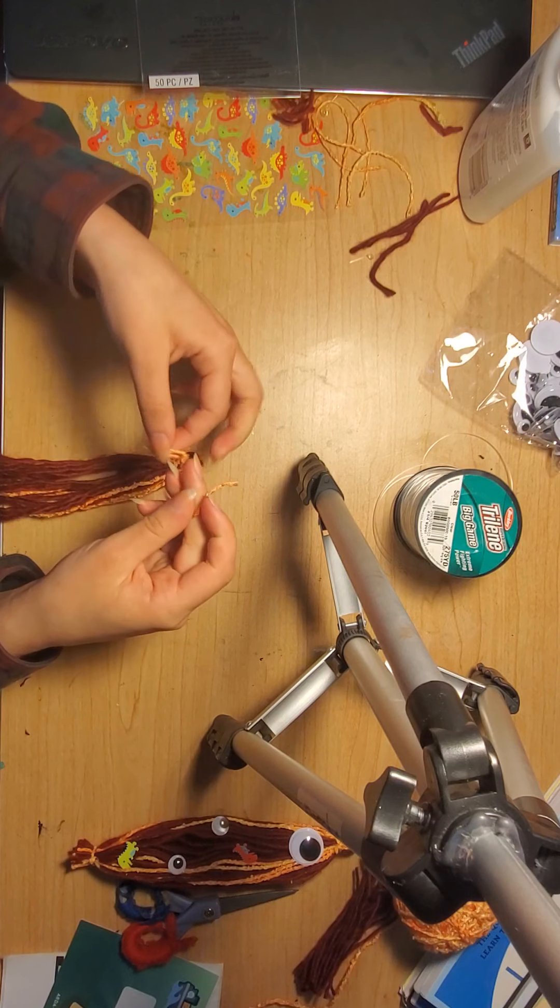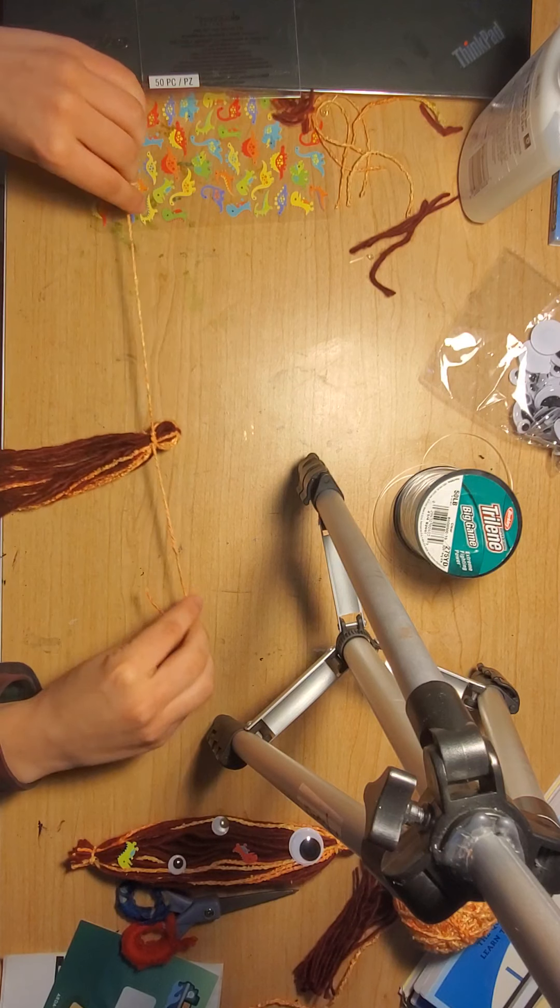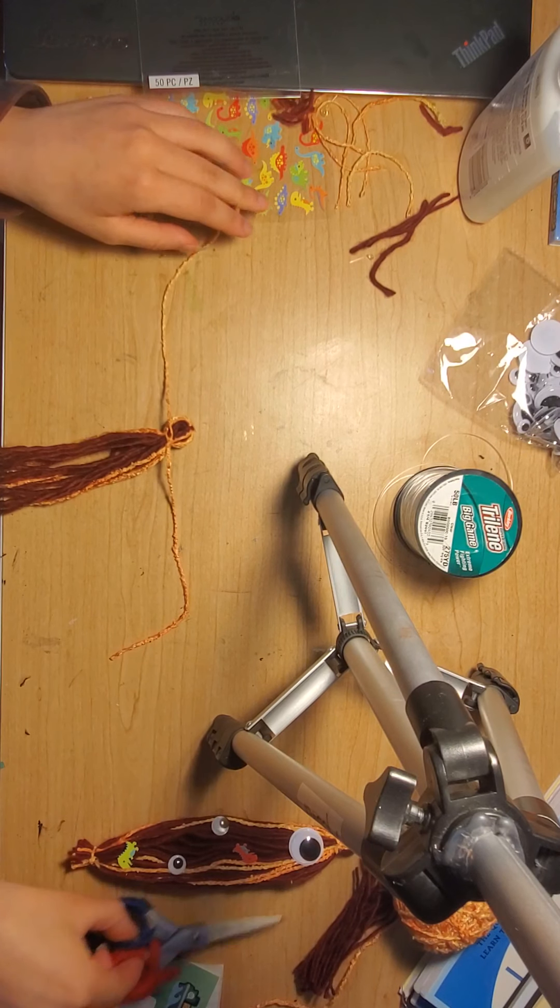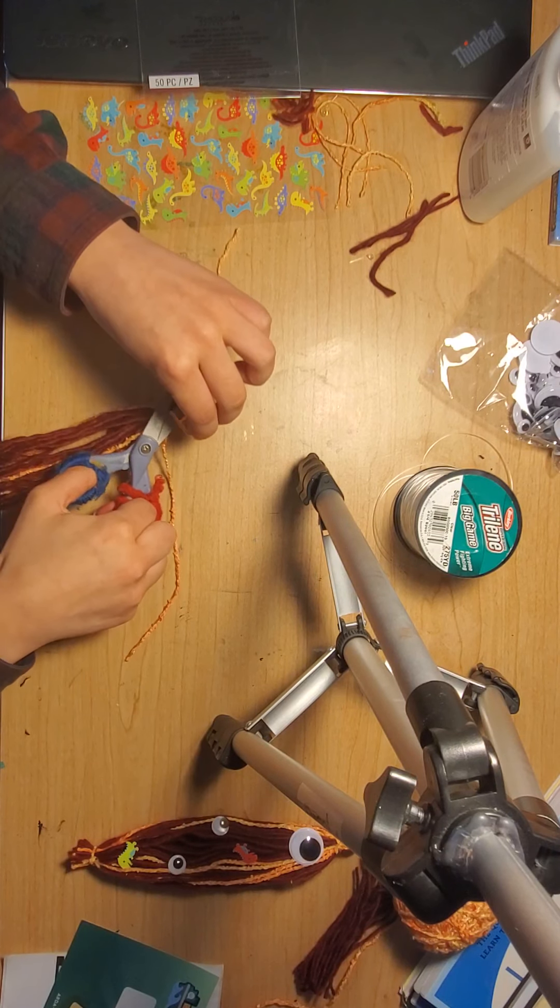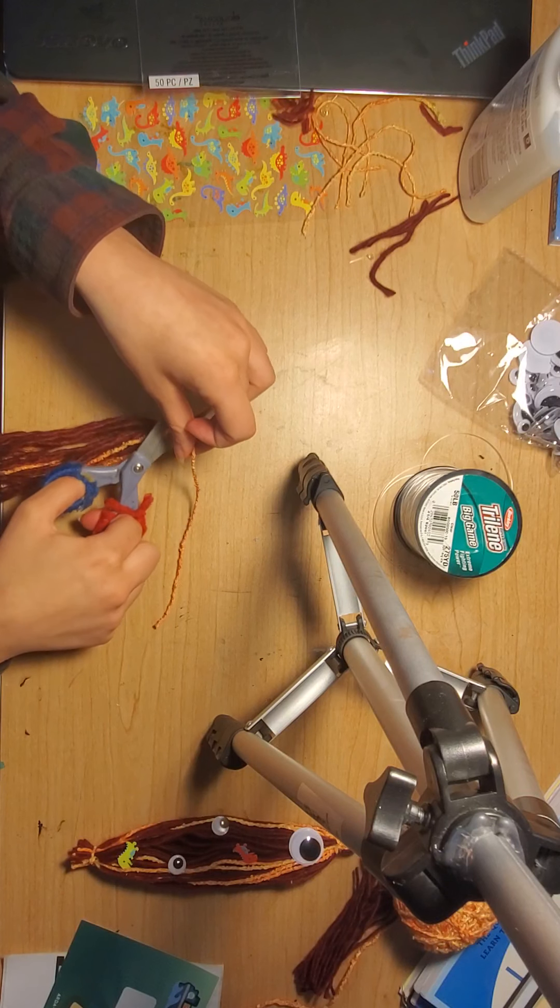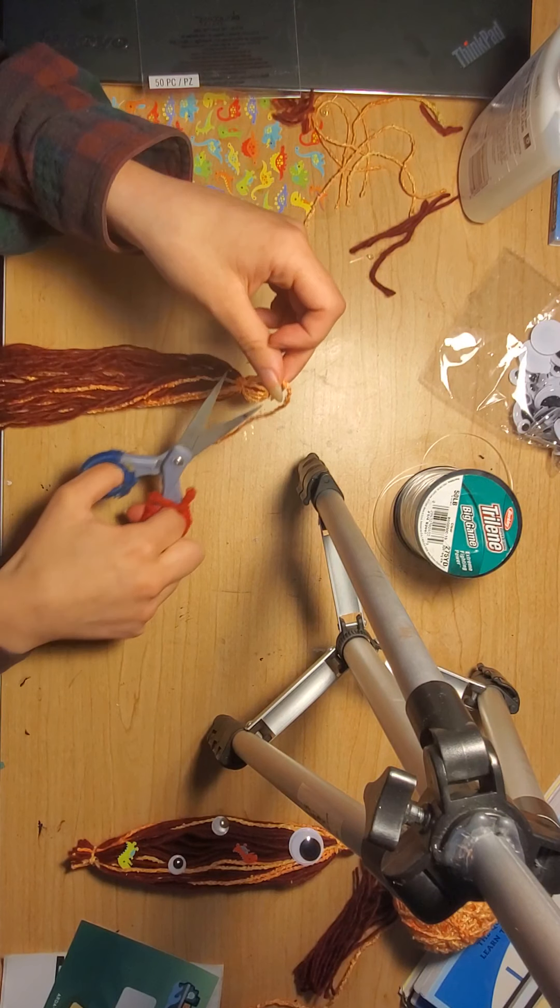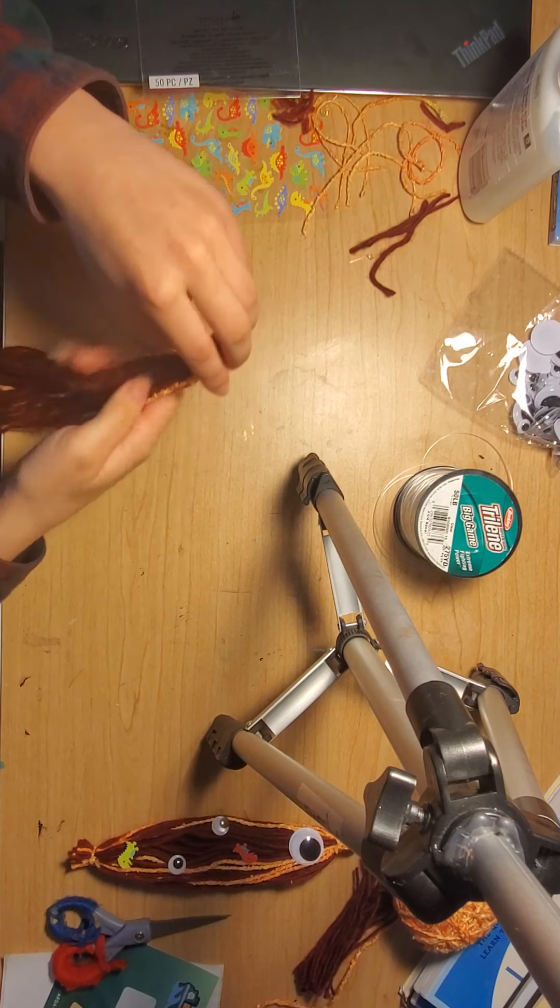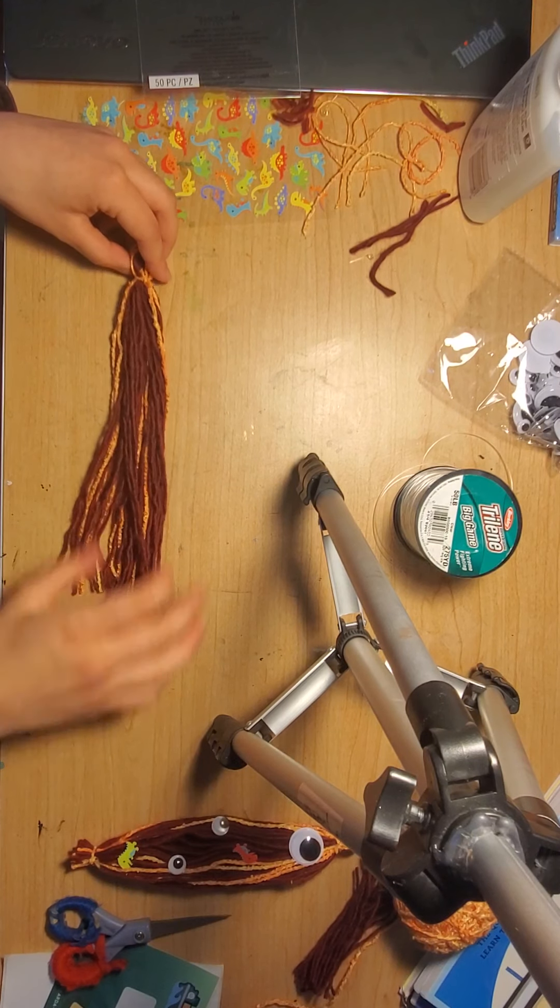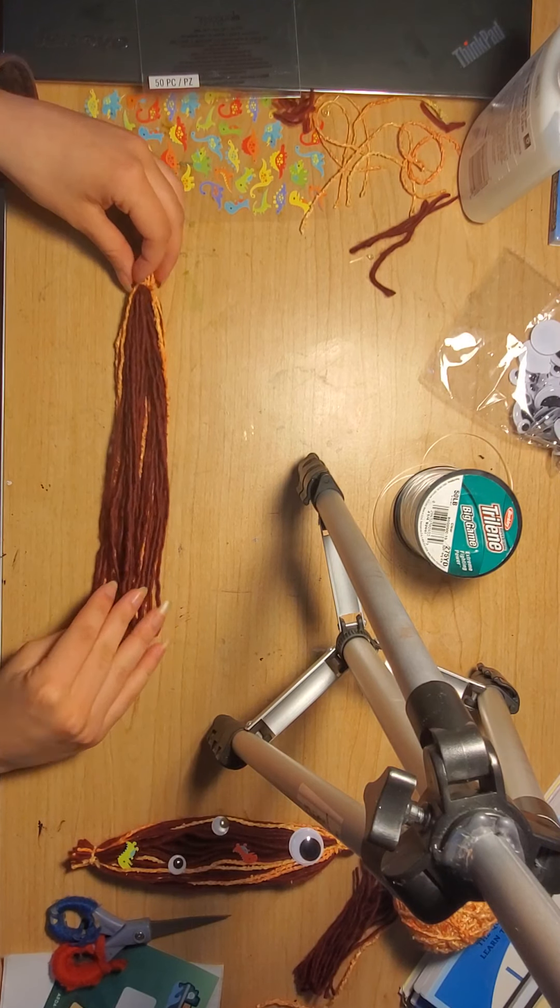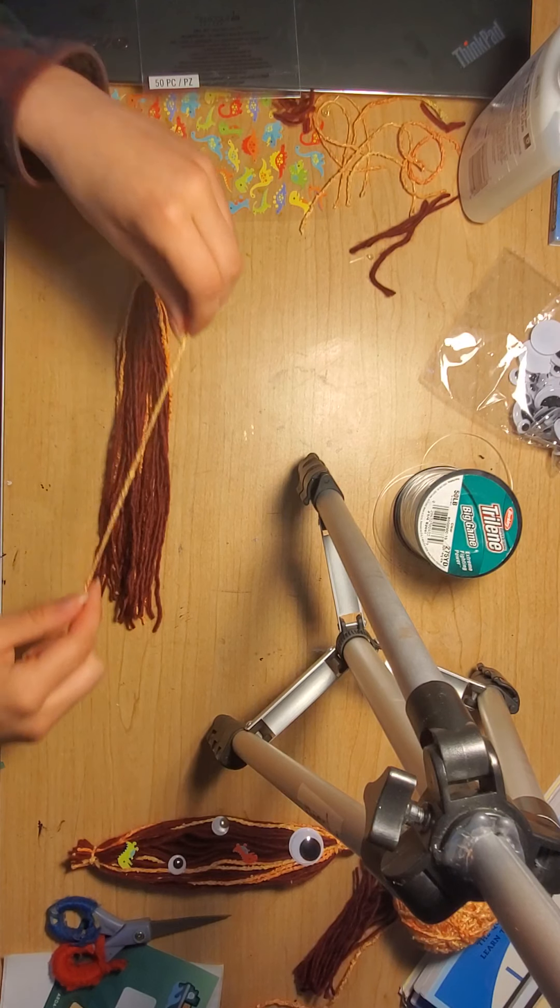And you're going to do it again just so that it doesn't come undone because we don't want our creature to fall apart. And I'm going to cut them so if you've got some safe scissors or a parent you can cut them. There you go. And then you've got the beginning of your fish body slash worm body whatever animal you've decided to call this.